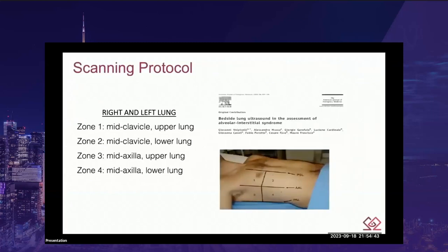The linear transducer is great for seeing the pleural line, but often doesn't allow enough depth to catch other pathologies. You have to have a scanning protocol. I predominantly practice in a cardiothoracic ICU, so I use the protocol validated in 2005 from the bedside lung ultrasound in the assessment of alveolar interstitial syndrome paper. I take the chest and divide it into four quadrants using the parasternal line, anterior axillary line, and posterior axillary line, drawing a line along about T5 or the nipple line.